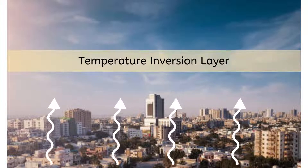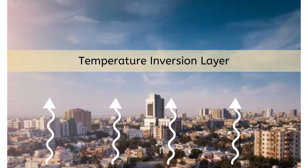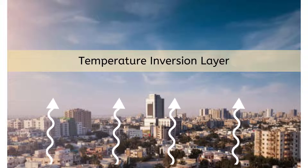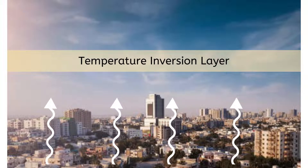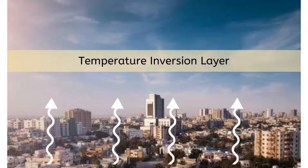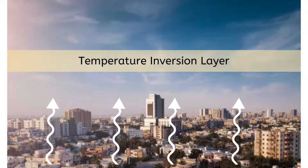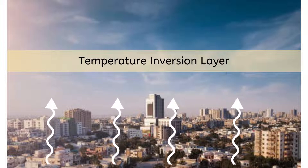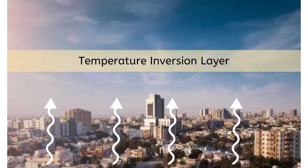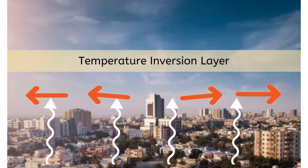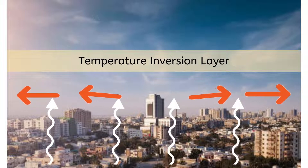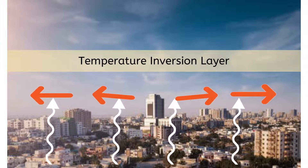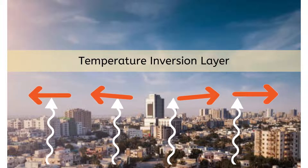When the rising air meets the temperature inversion layer — remember, this inversion layer has warm air trapped in it — the rising air's temperature is decreasing, and then it meets this warmer layer. The rising air has no way to go further up, so it is dispersed sideways. The temperature inversion layer acts as a cap.